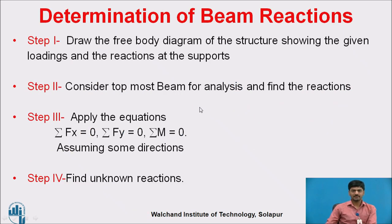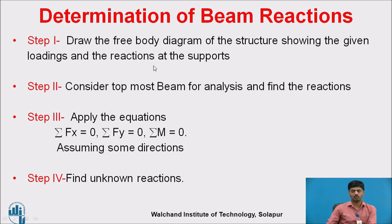These are the steps to determine beam reactions. First step: draw the free body diagram of the structure showing the given loading and the reactions at the supports. Remove the supports, mention the simple supports, and indicate the external point loads — whether point load, UDL, or UVL.